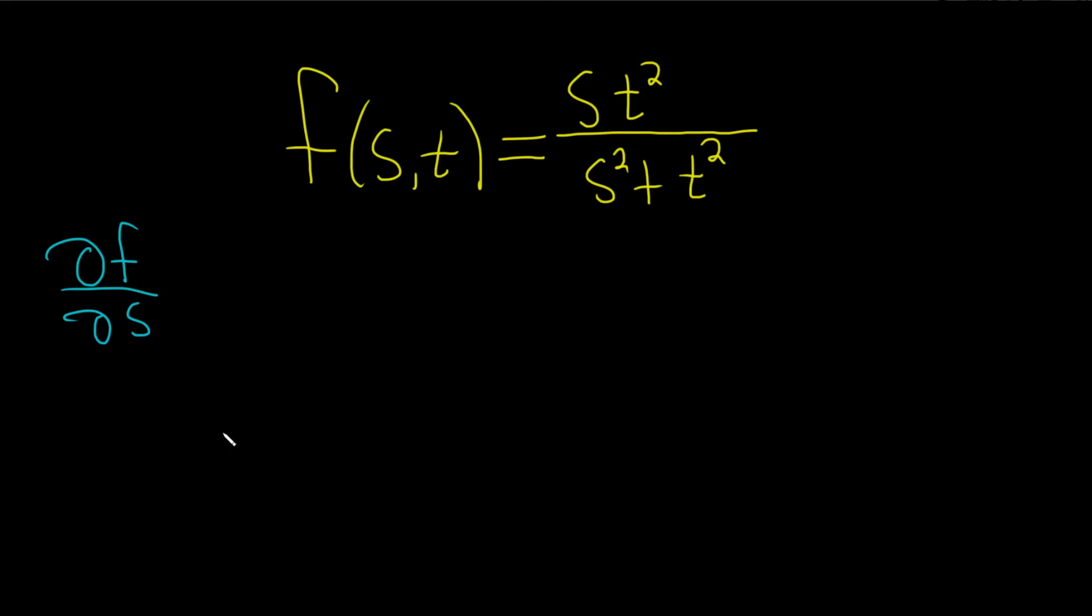In this problem we have a function of two variables and we're going to find the partial derivative of this function with respect to s. To do this we're going to use the quotient rule.